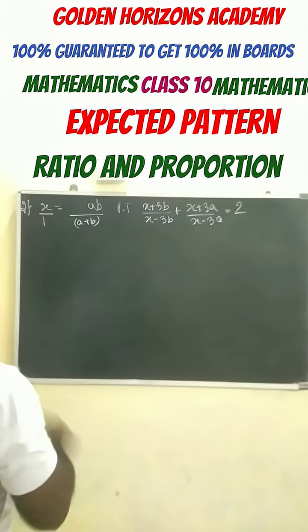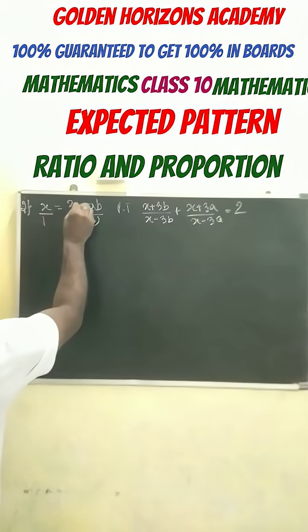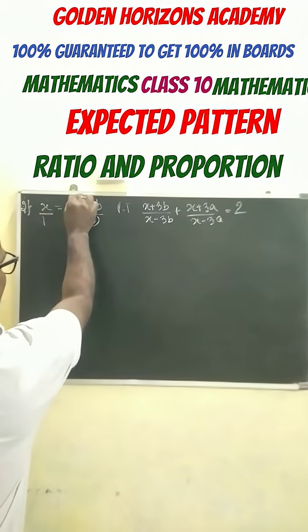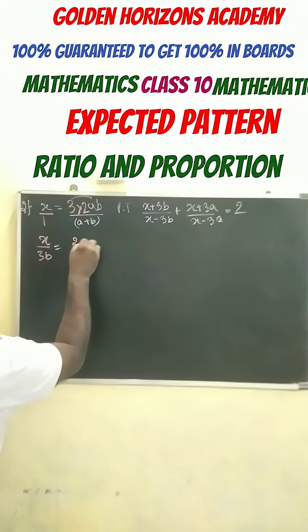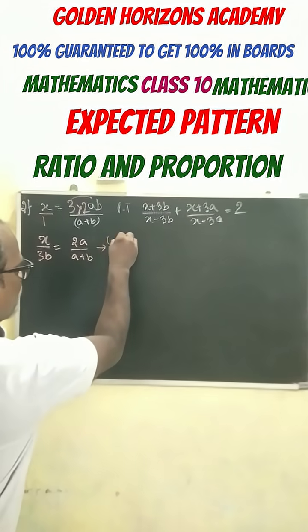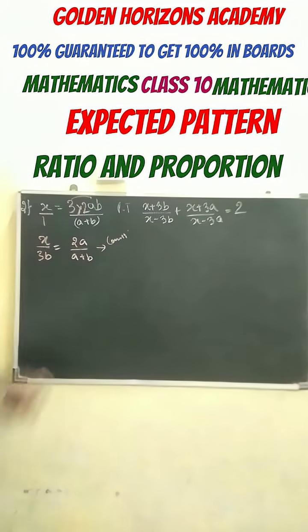Very simple. Just factorize 6 as 3 into 2. Then what happens? You can bring this 3b towards here. Next step, x by 3b equals 2a by a plus b. Now using componendo and dividendo. Here we use componendo and dividendo.